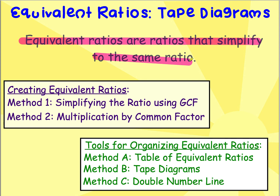We've already looked at creating equivalent ratios using two methods. The first was simplifying ratios using the GCF, and the second method was multiplying by a common factor.